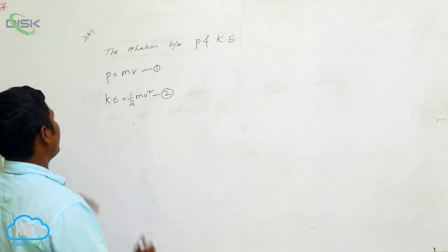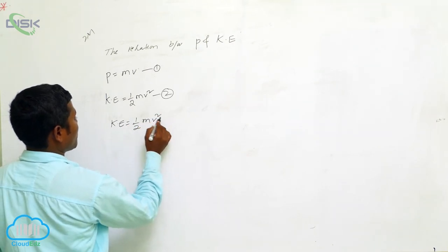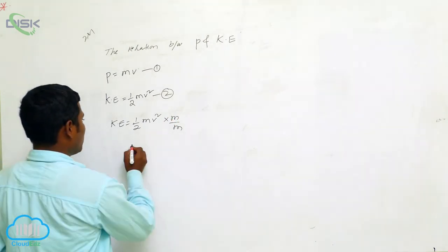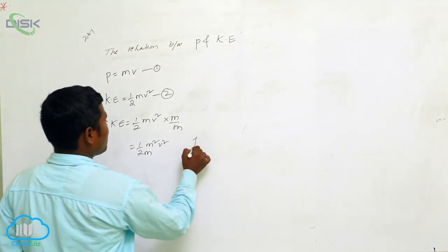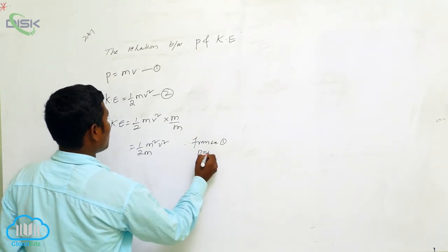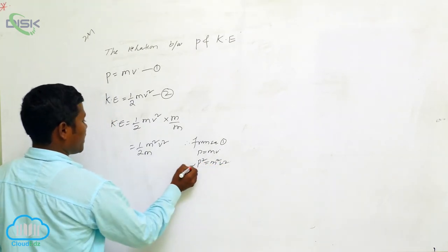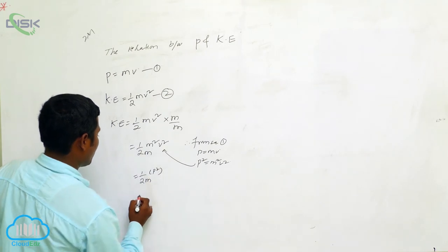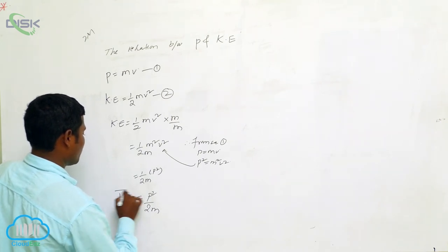What is the relation between P and KE? KE equals one-half MV squared. Now I am multiplying and dividing by M: KE equals one-half times M squared V squared divided by M, which gives one-half times M²V² over 2M. From equation 1, P equals MV, so P squared equals M squared V squared. Therefore KE equals P squared divided by 2M.